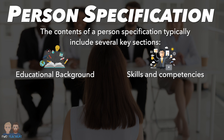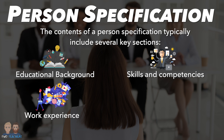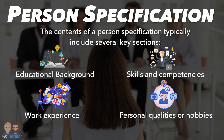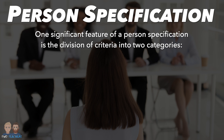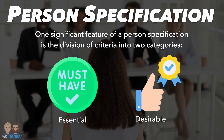A person specification also specifies the amount and type of prior work experience expected from applicants. For instance, a person specification for a senior management role might require at least five years of relevant experience. While less common, some person specifications may also include personal qualities or hobbies that the organisation values. One significant feature of a person specification is a division of criteria into two categories.